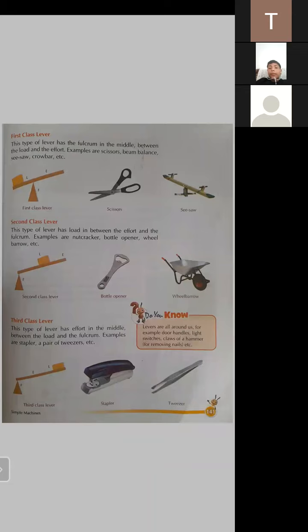Look at the diagram for each lever type. First class lever: when the fulcrum is in between the load and the effort. Examples are scissors and seesaw — at least two examples you must remember. Second class lever: the load is in the middle between the fulcrum and the effort. Examples are nutcracker, bottle opener, and wheelbarrow. Third class lever: the effort is in the middle between the load and the fulcrum. Examples are a stapler and a pair of tweezers.